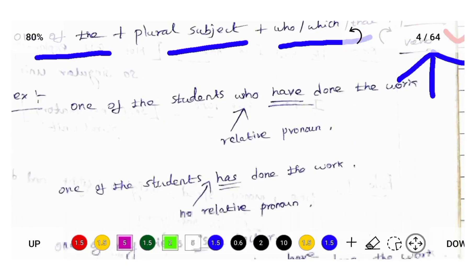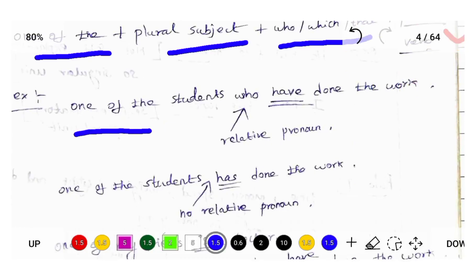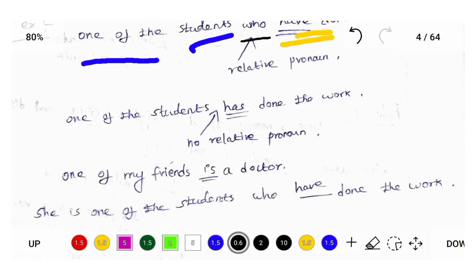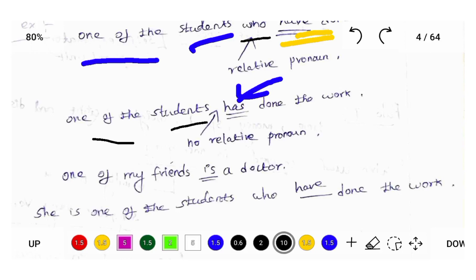We will see some examples. For example: 'one of the students who have done the exam' — one of the followed by students, and then followed by the relative pronoun 'who', so the verb should be in plural form: 'have'. Where there is no relative pronoun, we use singular form verb.